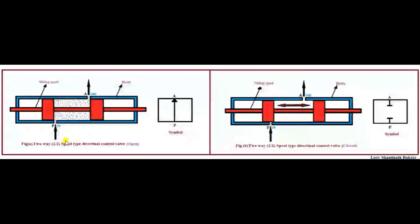Now we will discuss about the construction and working of a two-way, two by two spool type directional control valve. It consists of a valve body — this outer portion of the valve is called the valve body — and we have a sliding horizontal spool, which is mounted horizontally inside the valve.